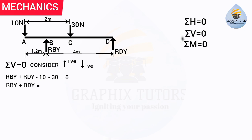Rearranging: RBy + RDy = 40 N. This is Equation 1. It is called Equation 1 because we have two unknowns — RBy and RDy — so we cannot solve it directly yet. We now move to the next condition: summation of moment about a point equals zero.